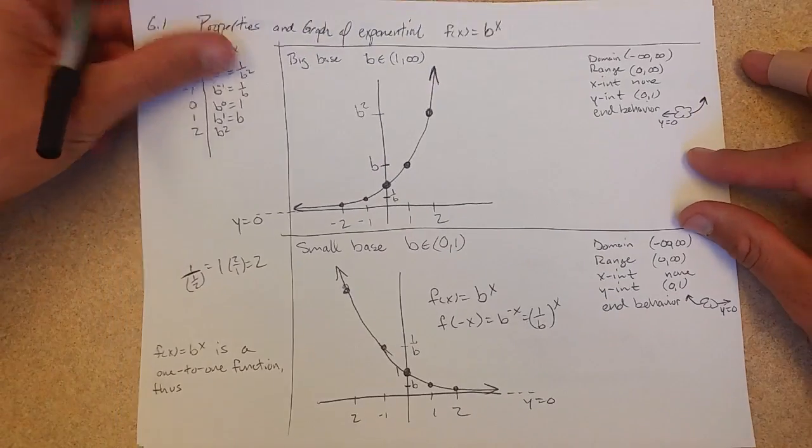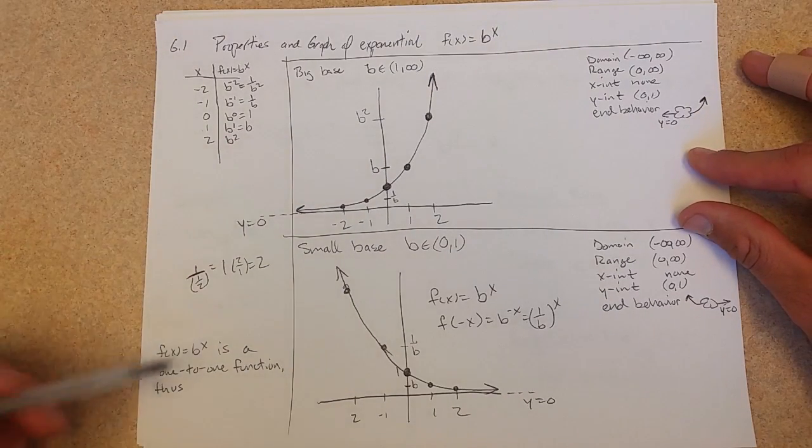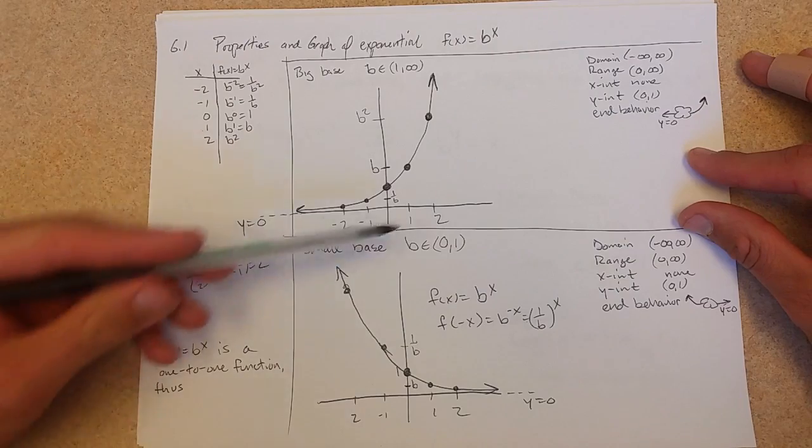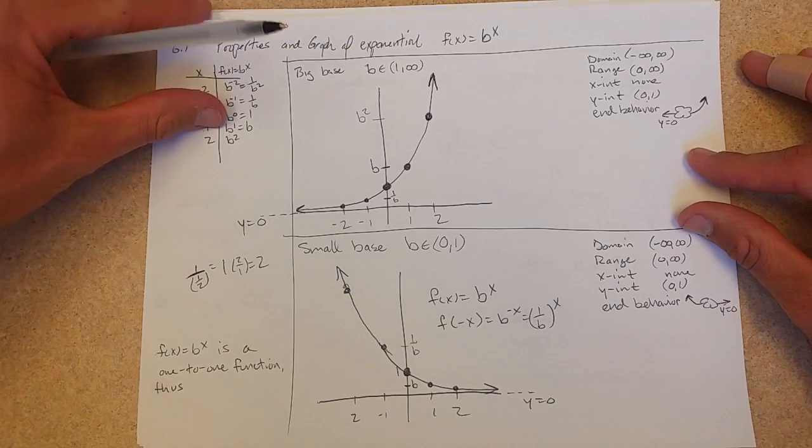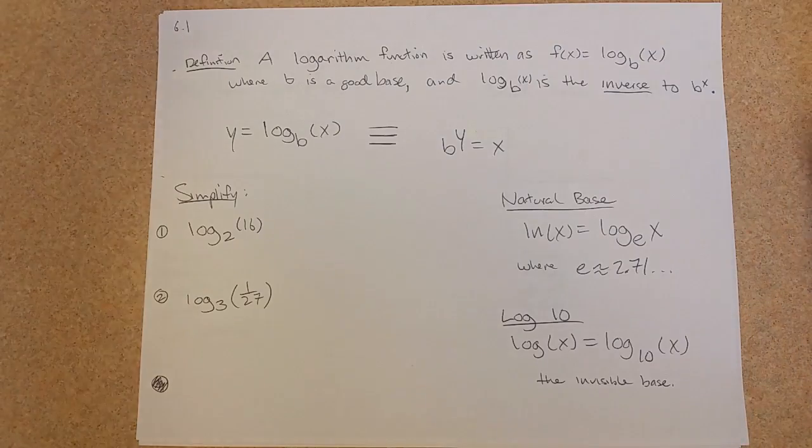Why do we have inverses? Looking at the graphs, we have one-to-one functions passing the horizontal line test. As long as you have a good base, you get an inverse.